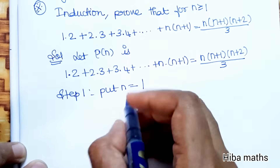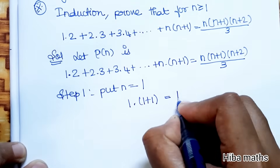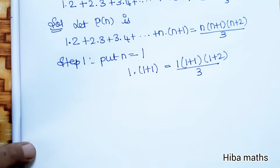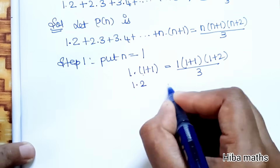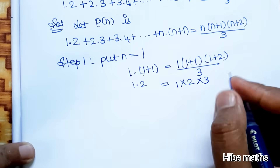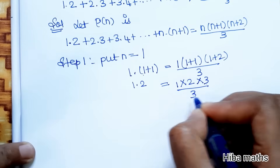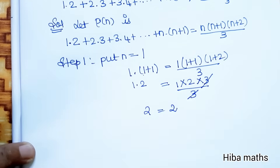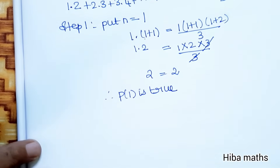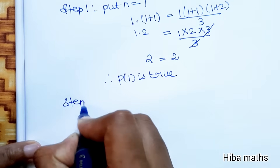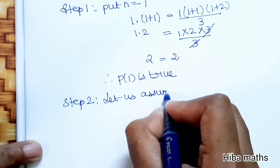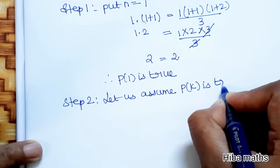For n = 1, the LHS term becomes 1·(1+1) = 1·2 = 2. The RHS becomes 1·2·3 / 3 = 2 — the 3s cancel. LHS = RHS = 2. Therefore P(1) is true.